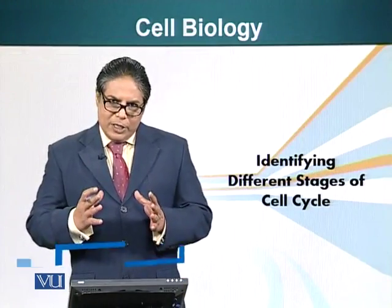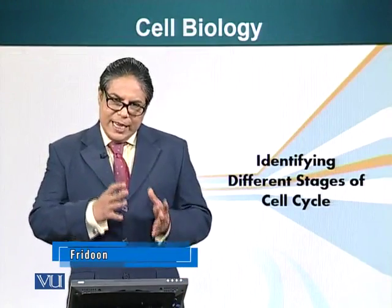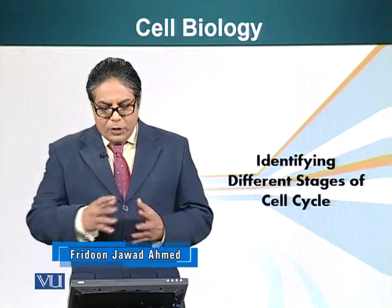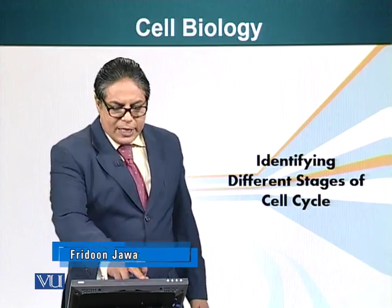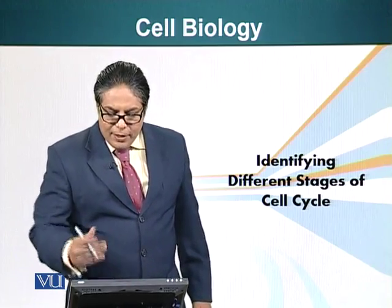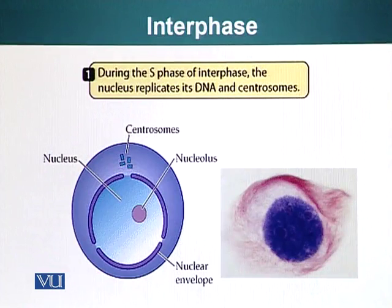Part of your lab work is to identify cells in different stages of the cell cycle. So let's see some photographs of the cell cycle so that you will have no difficulty identifying cells in different stages. During interphase — whether in S phase, G1, or G2 — the cells look about the same.